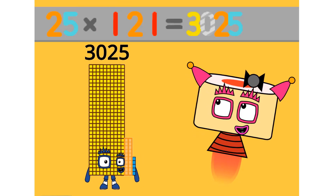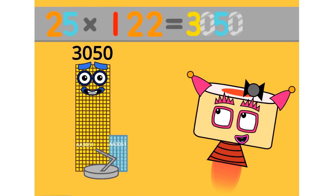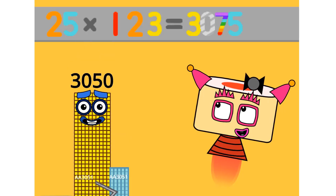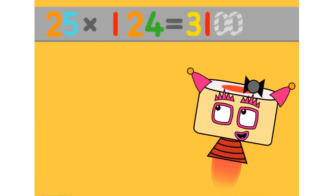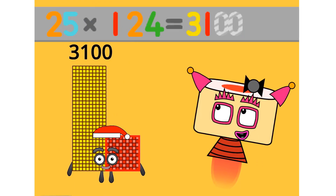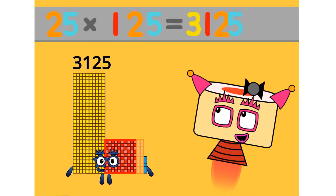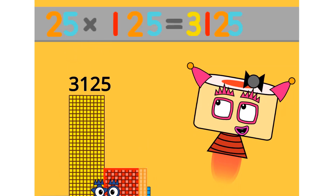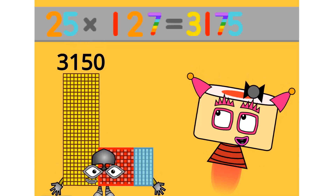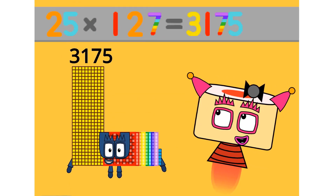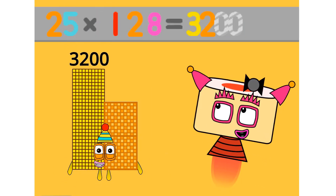25 times 121 equals 3025. 25 times 122 equals 3050. 25 times 123 equals 3075. 25 times 127 equals 3175. 25 times 128 equals 3200.